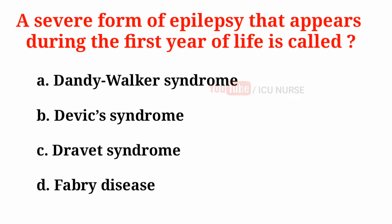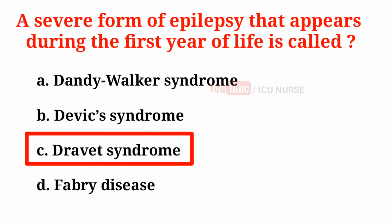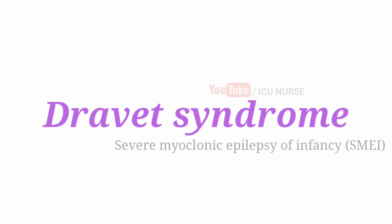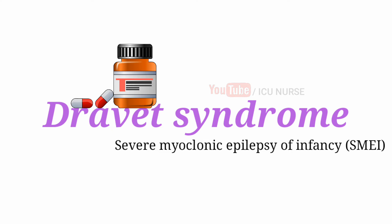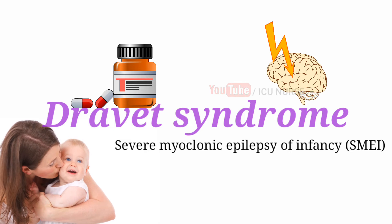A severe form of epilepsy that appears during the first year of life is called: A. Dandy-Walker syndrome, B. Devic's syndrome, C. Dravet syndrome, D. Fabry disease. The correct answer is C. Dravet syndrome. Previously known as severe myoclonic epilepsy of infancy, Dravet syndrome is a type of epilepsy with seizures often triggered by hot temperatures or fever. It is treated with anti-convulsant medications and often begins around 6 months of age.